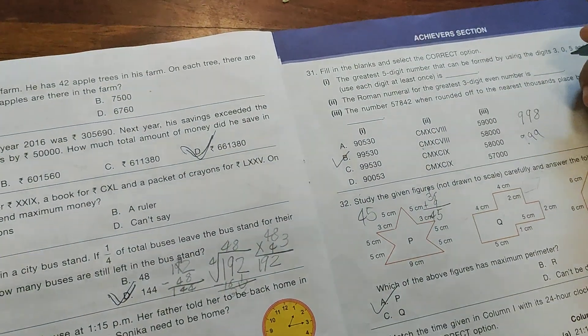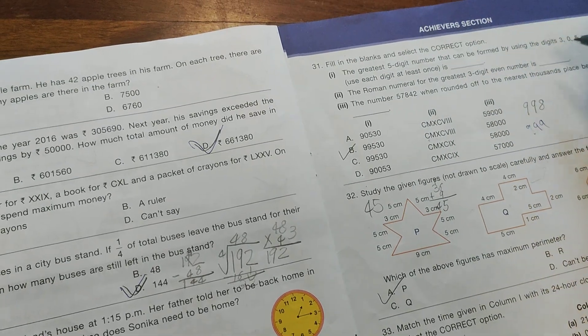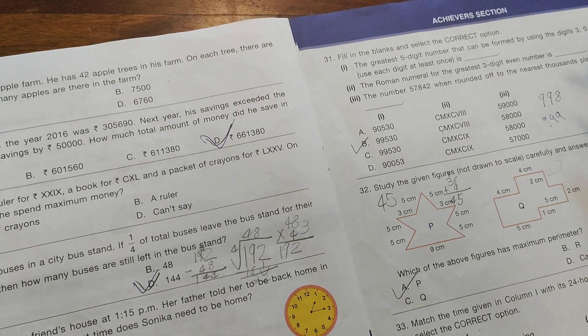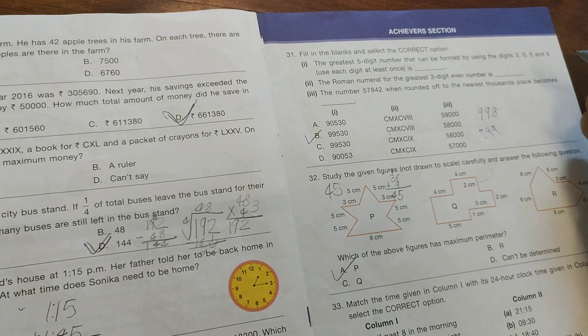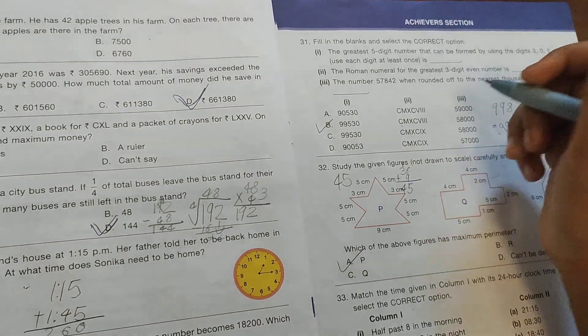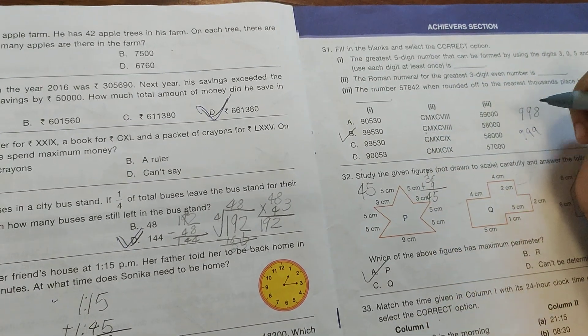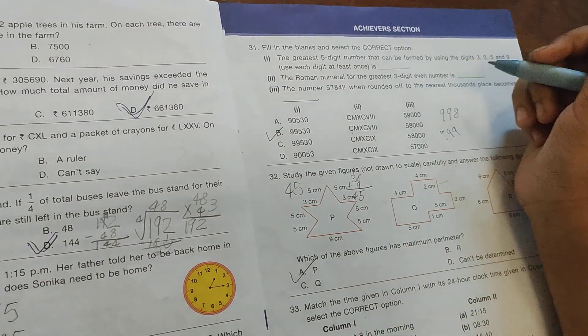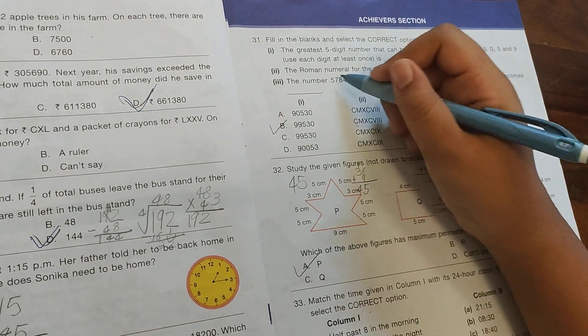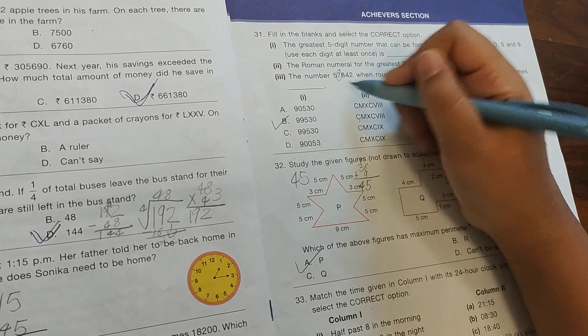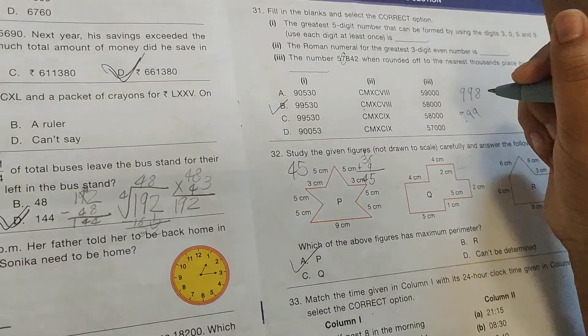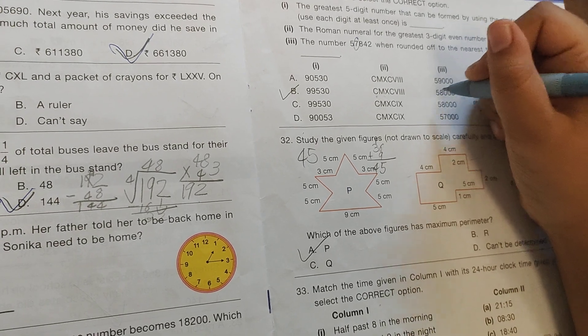The Roman numeral for the greatest 3-digit even number: Most might say 999, but that's wrong. The answer is 998, which is even. In Roman numerals, that's CMXCVIII. When the number 57,842 is rounded off to the nearest thousand, it becomes 58,000, which is option B.